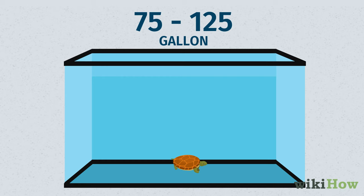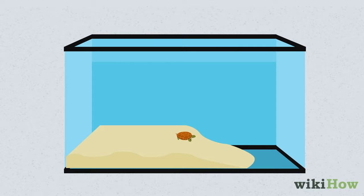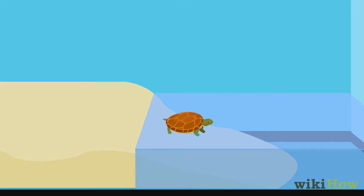Fill one side of the tank with aquarium gravel, sand, or wood so your turtle has something outside of the water to rest on. Fill the other half of the tank with water that's at least deep enough for your turtle to be fully submerged. Replace the water whenever it starts to look cloudy.